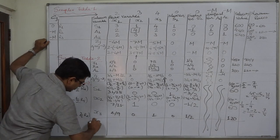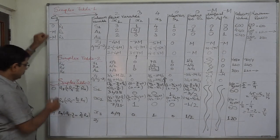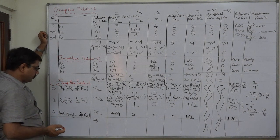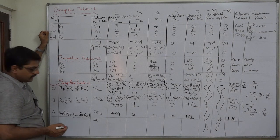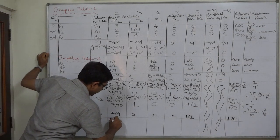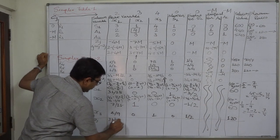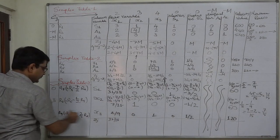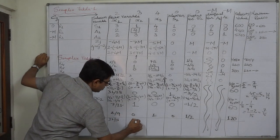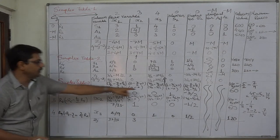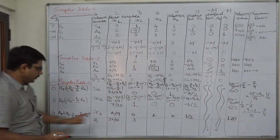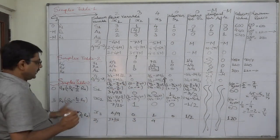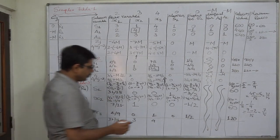x3 takes the place of A2. The coefficients are: 0 for x1, 3 for x2, and 4 for x3. Now we compute Zj: 0 × anything = 0; 3×(7/18) + 4×(2/9) = 37/18. Next: 0×0 + 3×1 + 4×0 = 3. Then: 0×0 + 3×0 + 4×1 = 4. Remaining elements: 0.